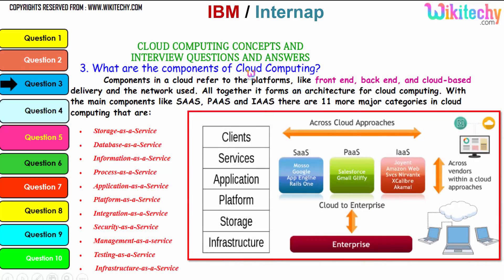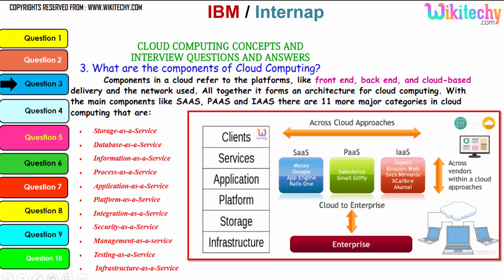Now let's talk about the components of cloud computing. Components in a cloud refer to platforms like front-end, back-end, cloud-based delivery, and the network used. Altogether, they form the architecture for cloud computing. The main components are software as a service, platform as a service, and infrastructure as a service.